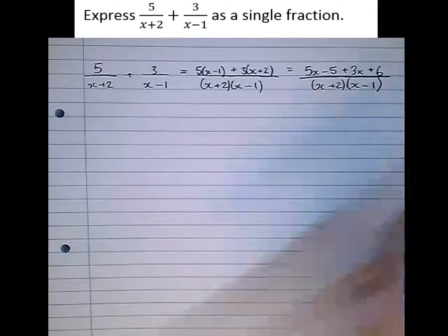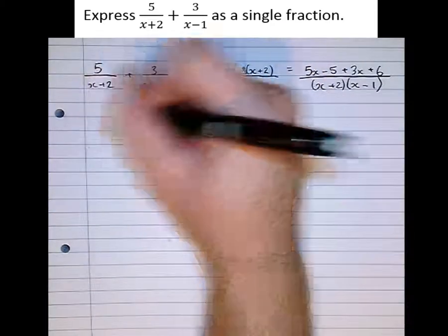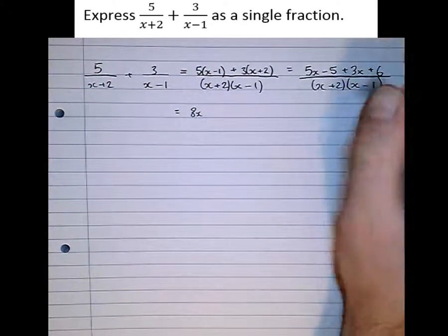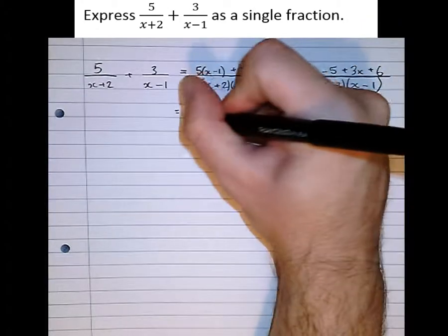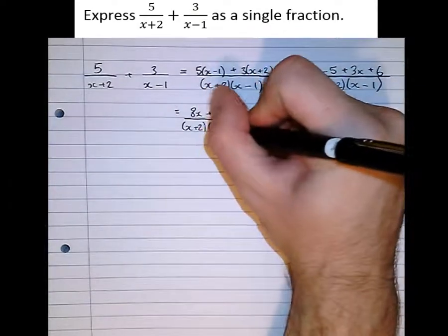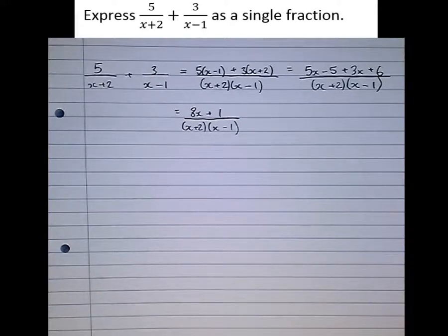Multiplying out the brackets and combining them together gives 5x − 5 + 3x + 6 over (x + 2)(x − 1). Notice I'm not multiplying the denominators out — that's wasteful and doesn't make it simpler. So this equals 8x + 1 over (x + 2)(x − 1). We've combined those fractions into a single fraction, but suppose we want to reverse the whole process.